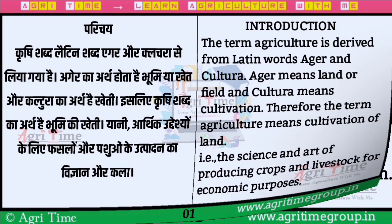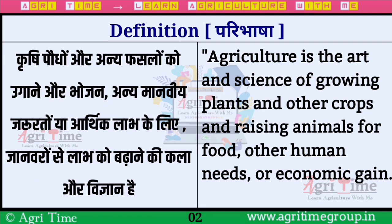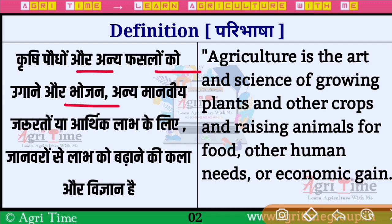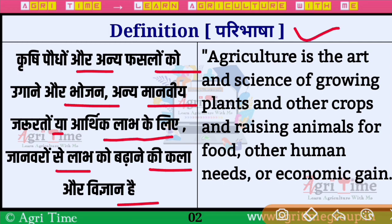बात करते हैं इसके definition की, यानि कि परिभाषा की। वैज्ञानिक ढंग से अगर इसकी परिभाषा बनाएं तो कुछ इस तरीके से बनेगी — Krishi, पौधों और अन्य फसलों को उगाने और भोजन तथा अन्य मानवीय जरूरतों या आर्थिक लाभ के लिए जानवरों से लाभ को बढ़ाने की कला और विज्ञान है। तो definition हो गया और introduction हो गया।